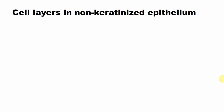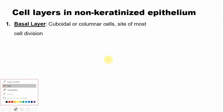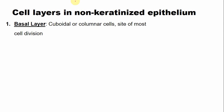The cell layers in a non-keratinized epithelium: the first cell layer is the basal layer, also known as the stratum basale. The stratum basale comprises cuboidal and columnar cells associated with the basement membrane or basal lamina, and most of the cell division occurs in the basal layer.